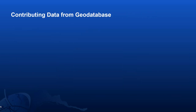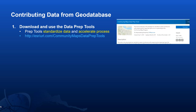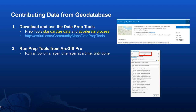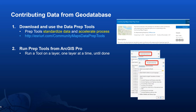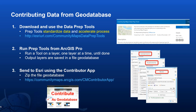If you're going to contribute data from a geodatabase, the first thing you would do is download and use a set of data prep tools. These prep tools standardize the data and accelerate the contribution process — you run them from ArcGIS Pro, one layer at a time. If you were providing building footprints, you would run a building footprints tool; for road centerlines, a road centerlines tool; for parcels, a parcels tool. All output layers are saved into a file geodatabase. The final step is to zip up that file geodatabase and use the contributor app to send it in to us.